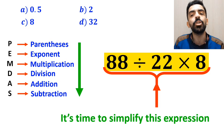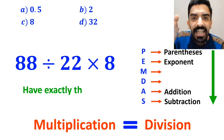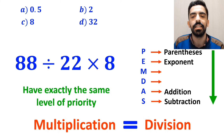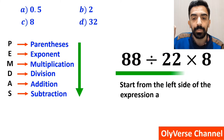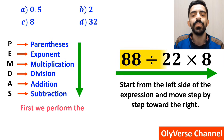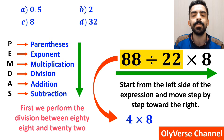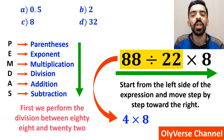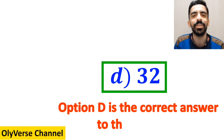It's very important to note that in the PEMDAS rule, multiplication and division have exactly the same level of priority. In this case, all we need to do is start from the left side of the expression and move step by step toward the right. So first we perform the division between 88 and 22, which simplifies this expression to 4 multiplied by 8. And finally, the value of this expression is 32. Therefore, Option D is the correct answer to this question.